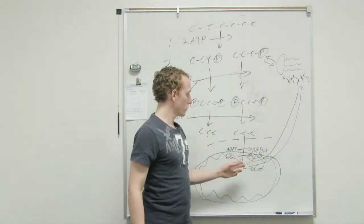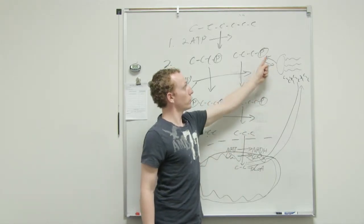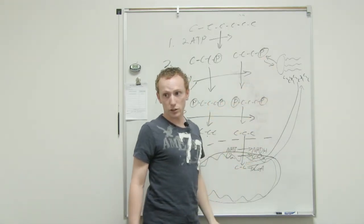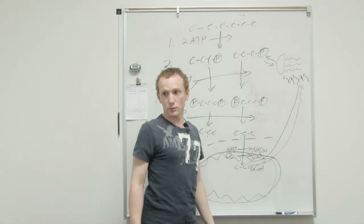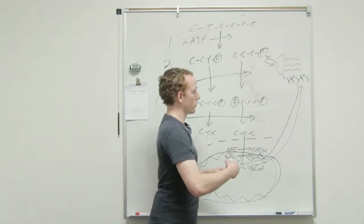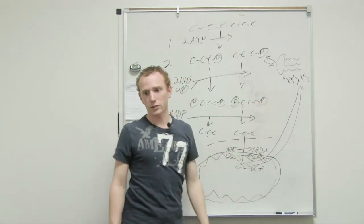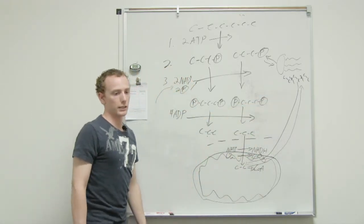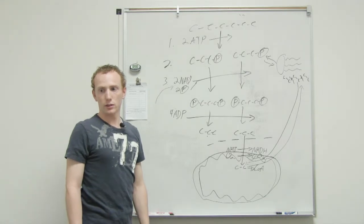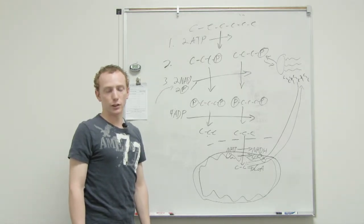This one's gluconeogenesis, but this one is beta-oxidation. So, forming acetyl-CoA from the fatty acids is going to be beta-oxidation. I'm specifying that one because it's a very forgotten thing to study.